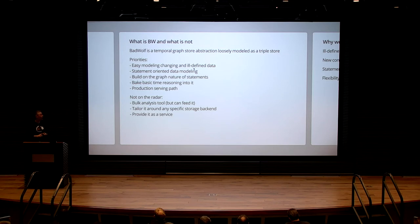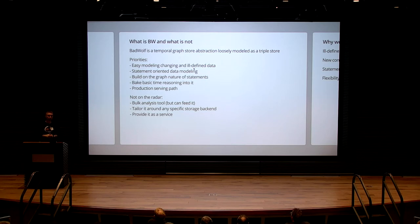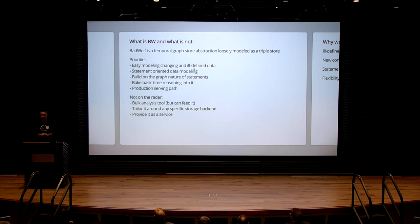What Bad Wolf is and is not is a complicated question. When people hear 'graph stores' they have all sorts of different ideas. We started with something very simple: we needed an easy way to model changing, ill-defined concepts. I'm the TL for a team at Google that works on fighting spam and abuse — the guys that filter the bad stuff that comes your way. We needed the ability to express new concepts and reason about them without having to build yet another piece of production code. We wanted an easy way to express concepts and statements.